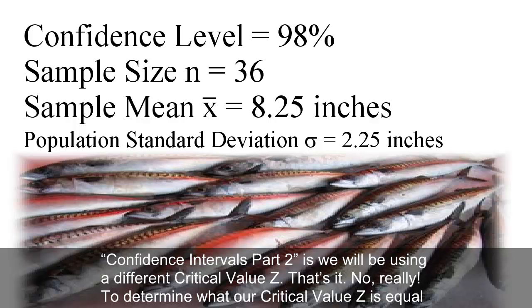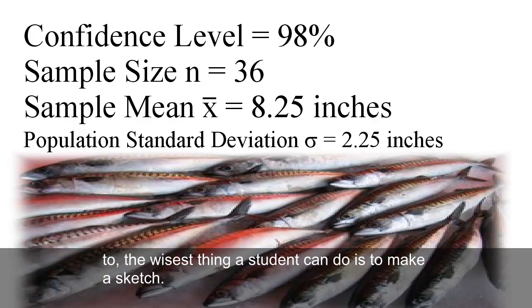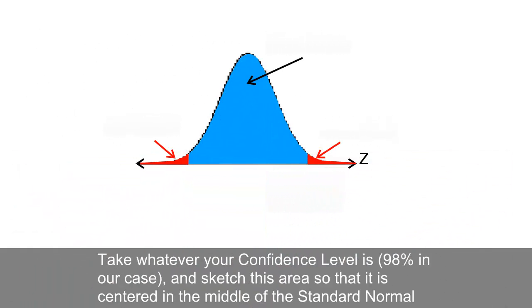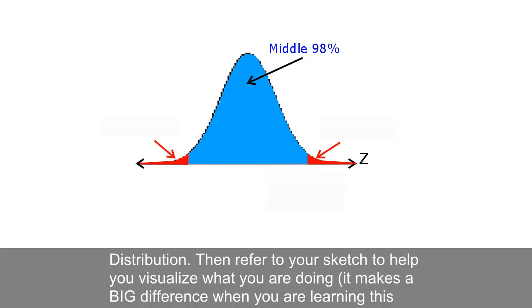That's it! No, really! To determine what our critical value z is equal to, the wisest thing a student can do is to make a sketch! Take whatever your confidence level is, 98% in our case, and sketch this area so that it is centered in the middle of the standard normal distribution. Then refer to your sketch to help you visualize what you are doing! It makes a big difference when you are learning this material.